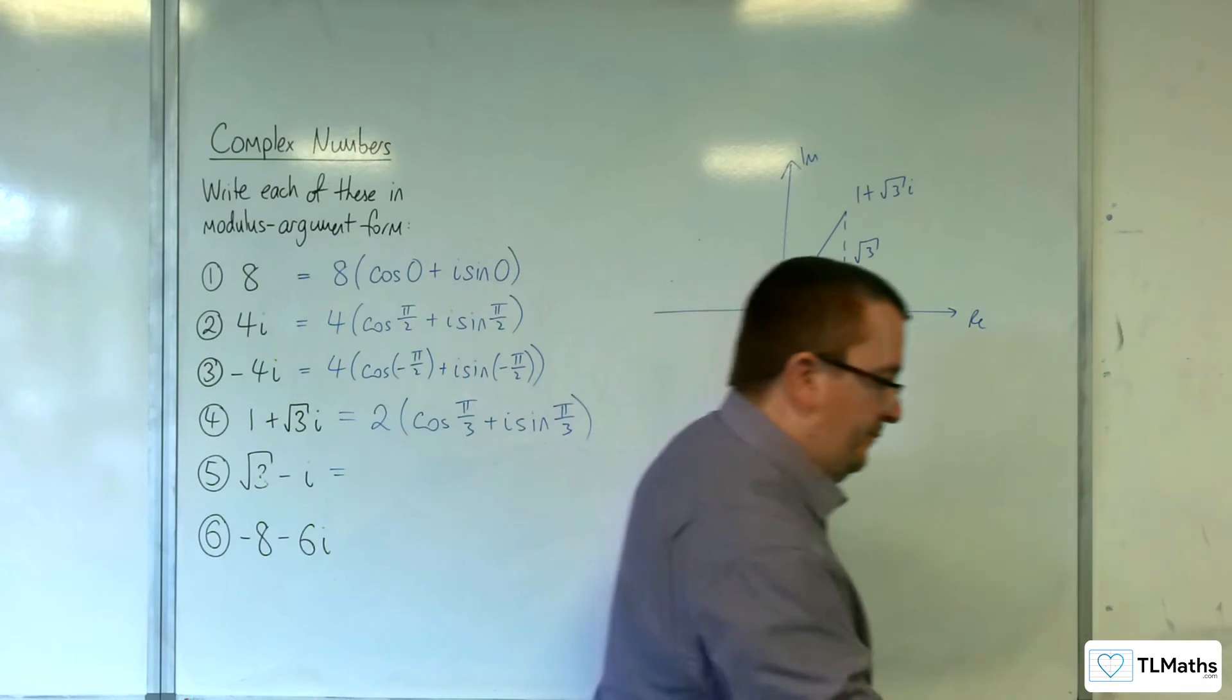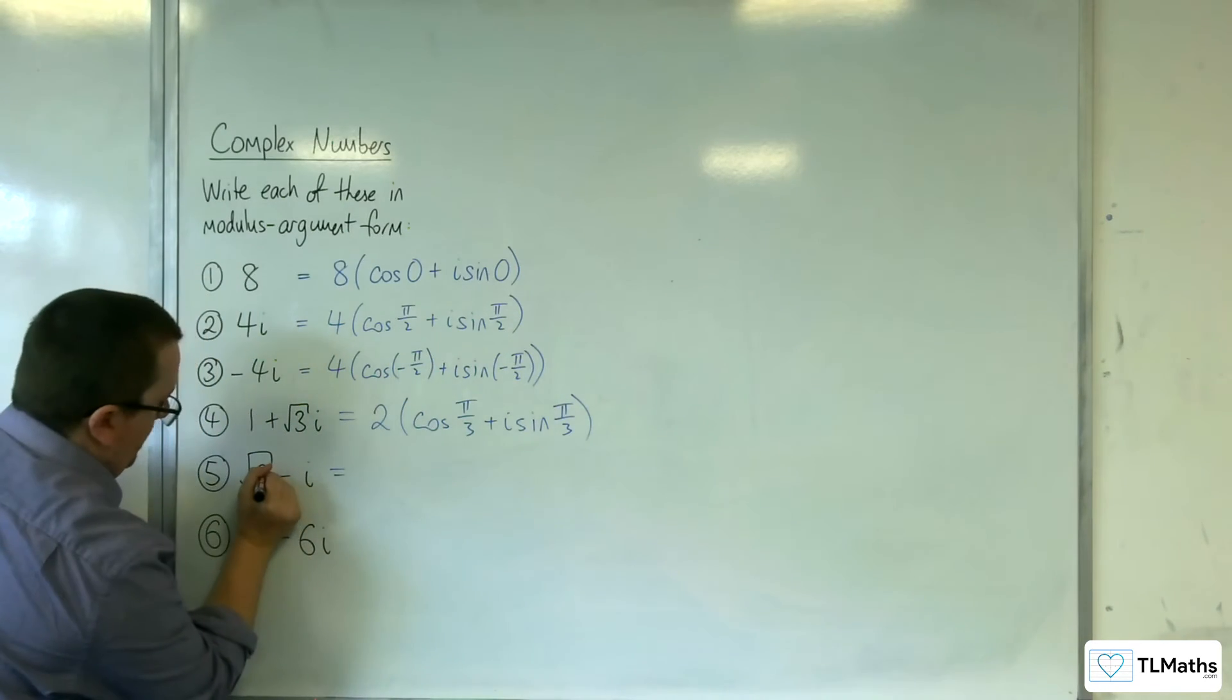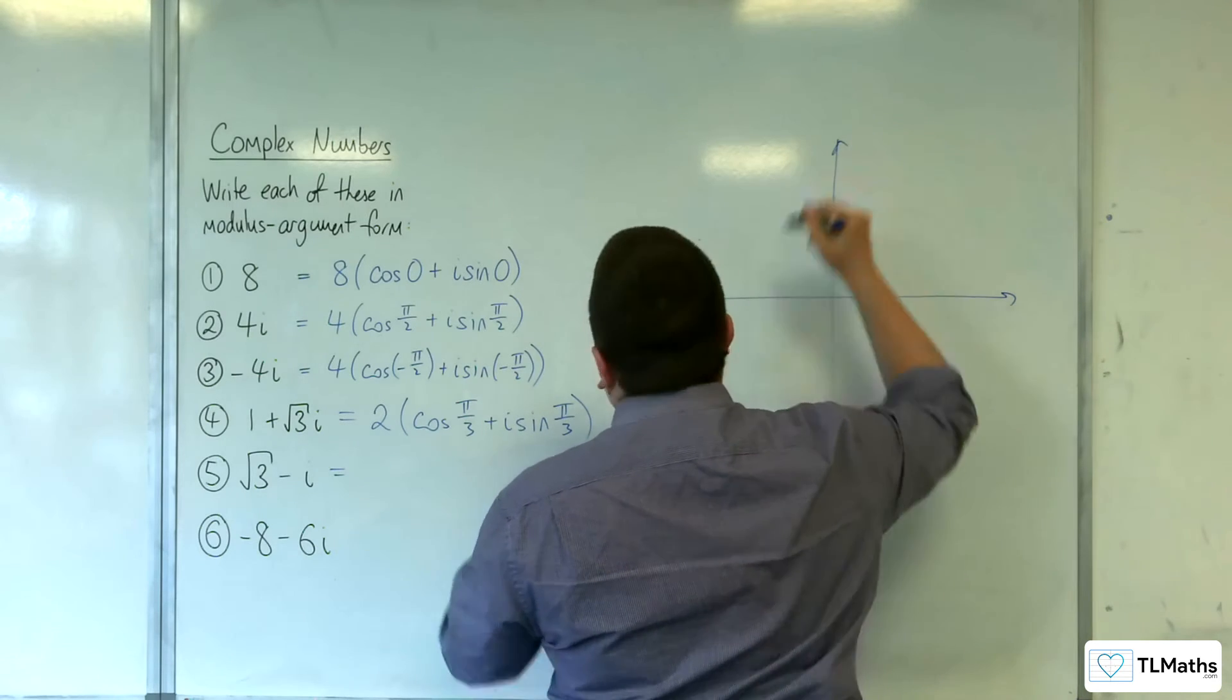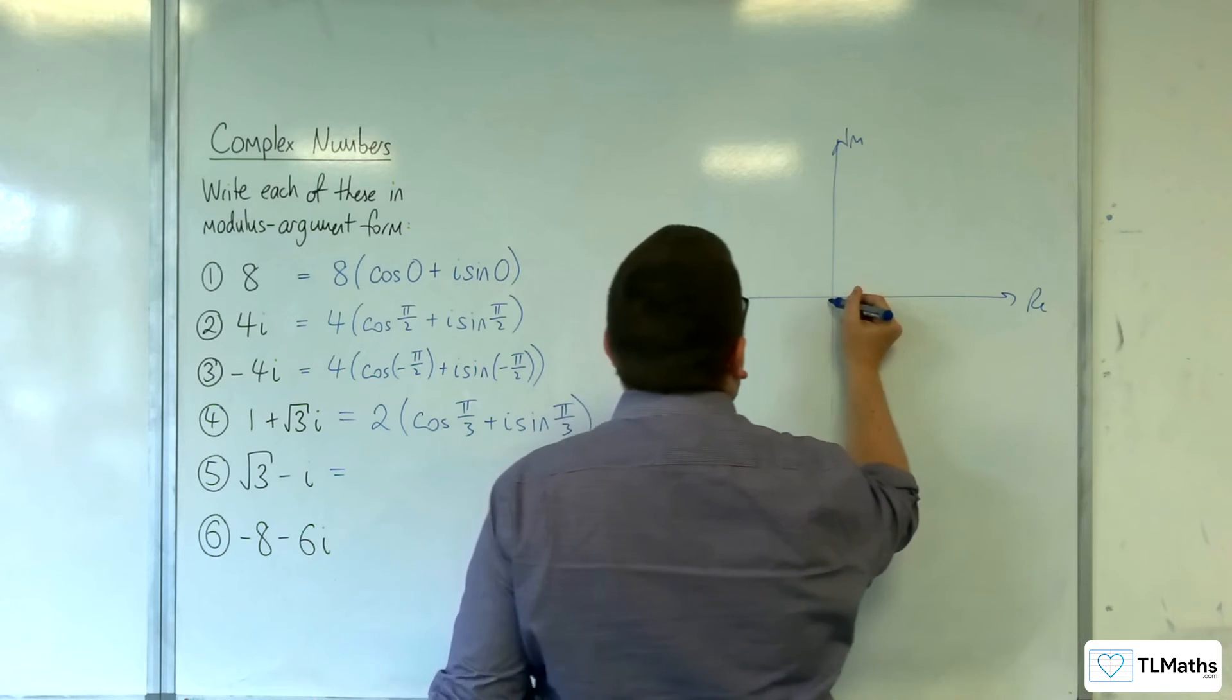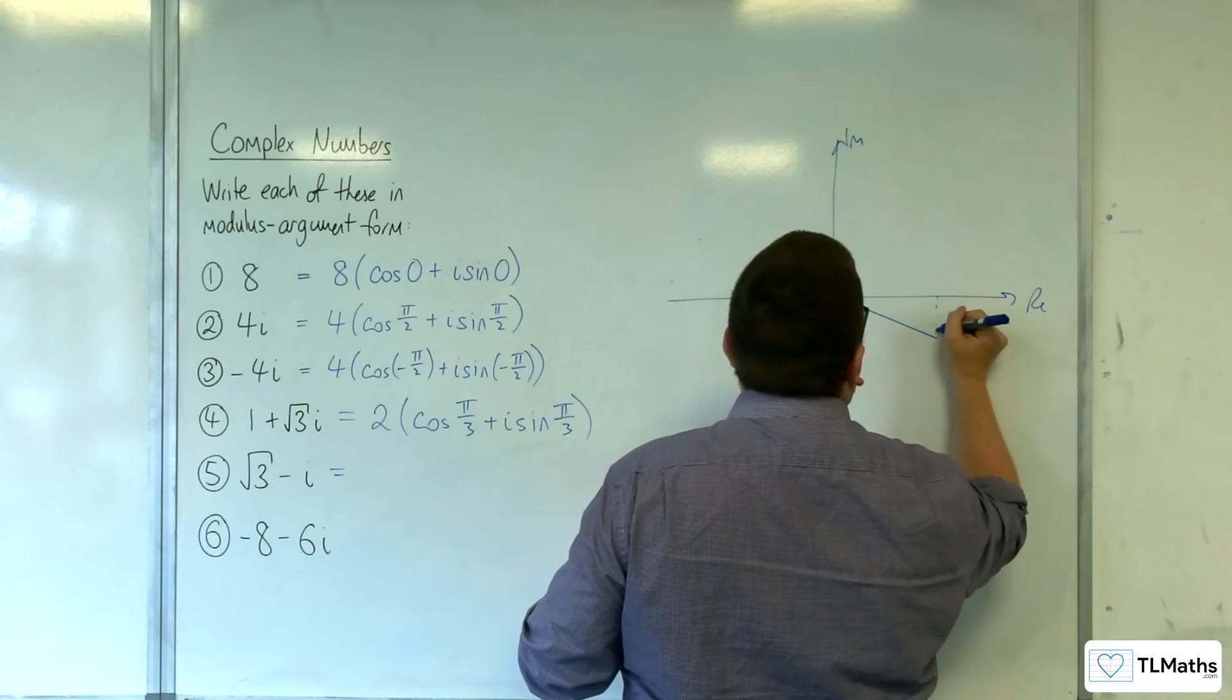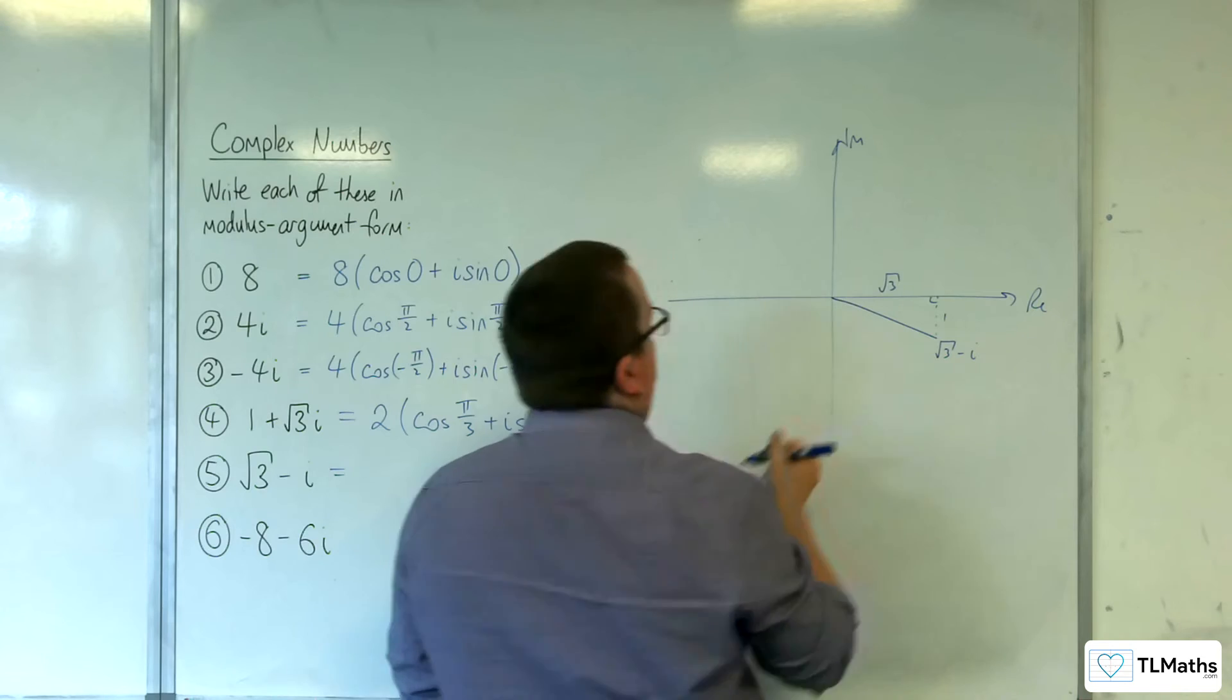Number 5: √3 take away i. So √3 along and 1 down.